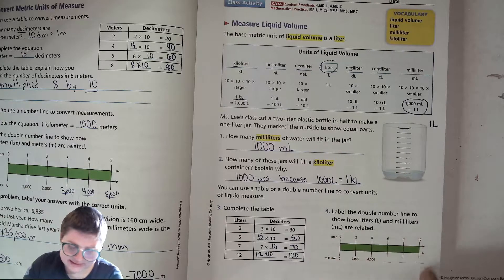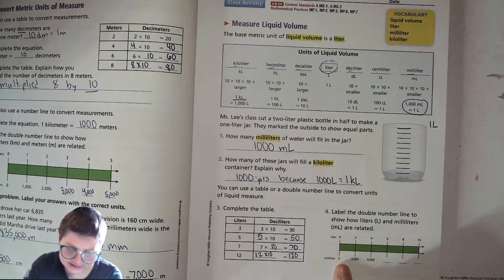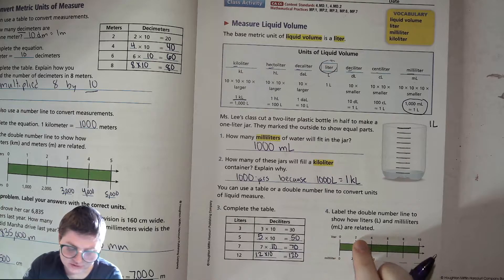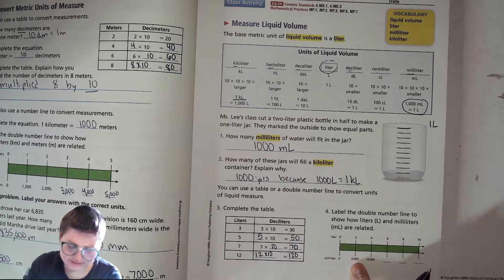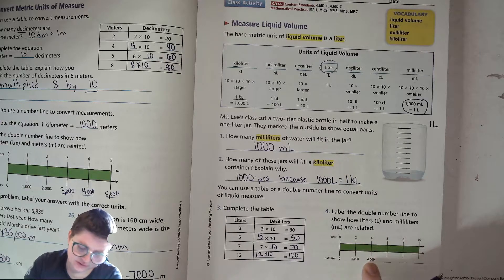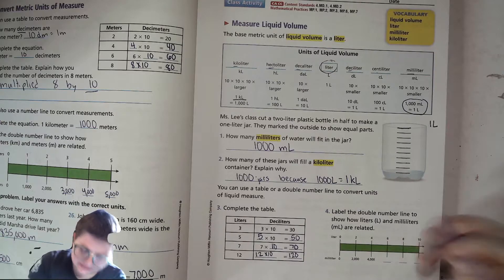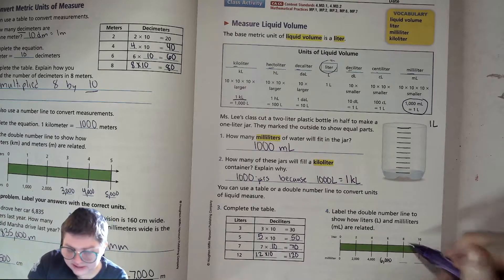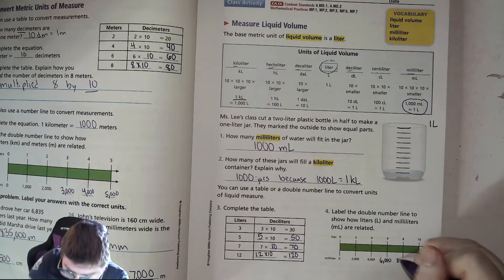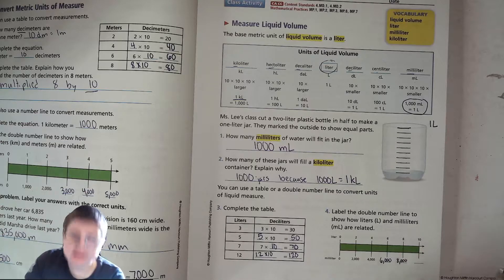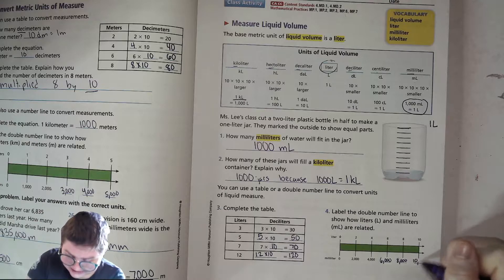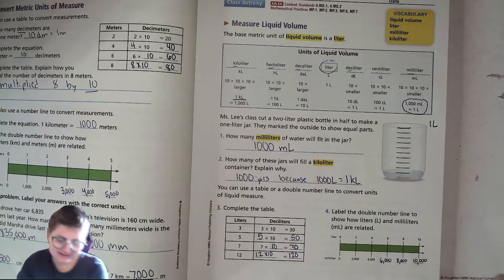Okay. Now we're labeling this number line, converting from liters to milliliters. So in zero liters, there are zero milliliters. In two liters, there are 2,000 milliliters. Four liters? 4,000. Six liters? Guess what? 6,000 milliliters. Eight liters? 8,000 milliliters. 10 liters? 10,000 milliliters. Isn't that nice?